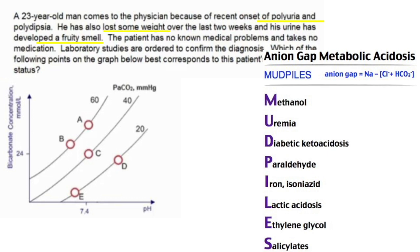First, draw a vertical line. This axis is the pH and this is the bicarbonate concentration. Along this curve, as you go up there's more CO2, and as you go down there's less CO2. So we have three parameters here representing the arterial blood gas values on the curve.